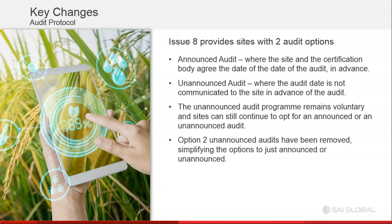Changes to the audit protocol: the clauses cover audit requirements from sections one through nine. Issue 8 provides sites with two audit options: announced audit and unannounced audit. Previously, unannounced audits were split into option one and option two, which caused a lot of confusion. BRC has let go of option two. There are now just announced and unannounced audits, and these are still voluntary.